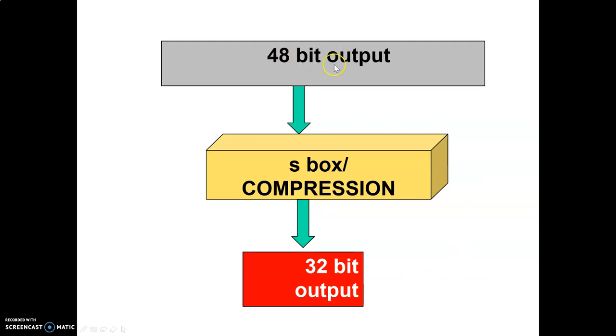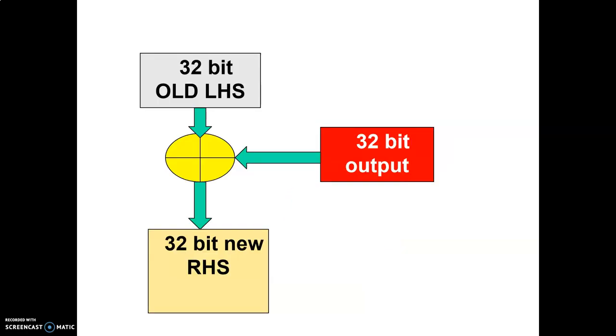The 48-bits are going to be given to the S-box as input. S-box is also called a compression box. This S-box will accept the 48-bit input from the previous step and generate a 32-bit output. As we have seen previously in the DES lecture video, the 32-bit output, which is the output of the Mangler function, is going to be XORed with the 32-bit left hand side of the input. The result will become the new 32-bit right hand side, which is the output of that particular round.